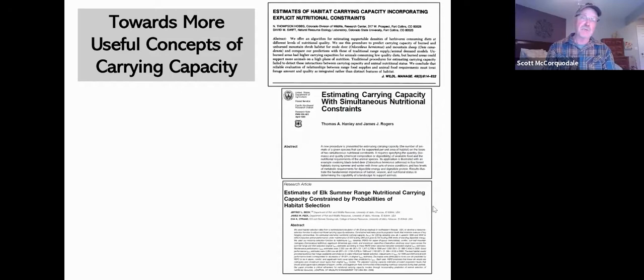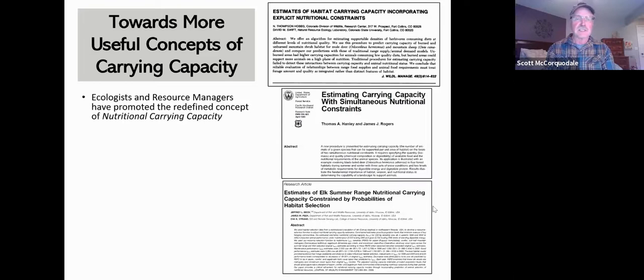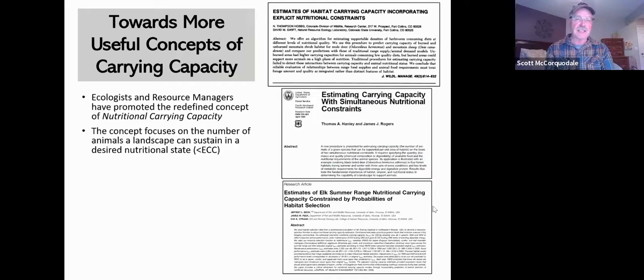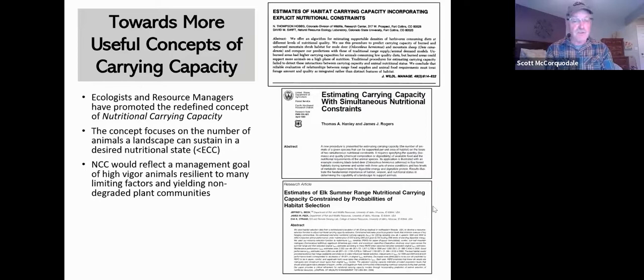There has been work done towards developing something that would be potentially more useful as a concept of carrying capacity than straight-up K or ECC. Ecologists and resource managers have promoted a redefined concept of nutritional carrying capacity. This concept focuses on the number of animals a landscape can sustain in a desired nutritional state, and that's going to be something less than ECC. Nutritional carrying capacity would reflect the management goal of high vigor animals resilient to many limiting factors and yielding non-degraded plant communities.